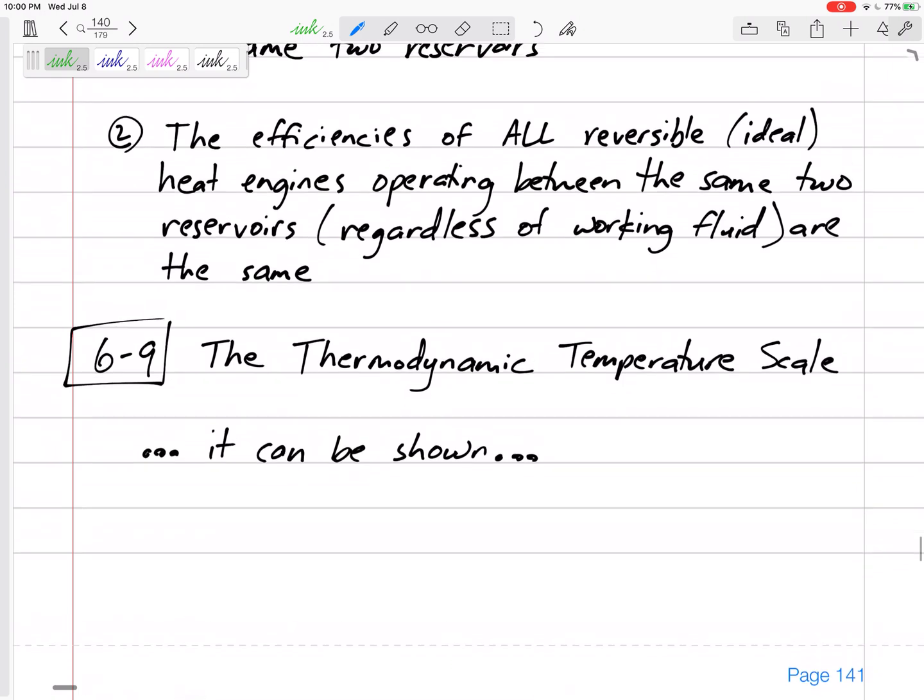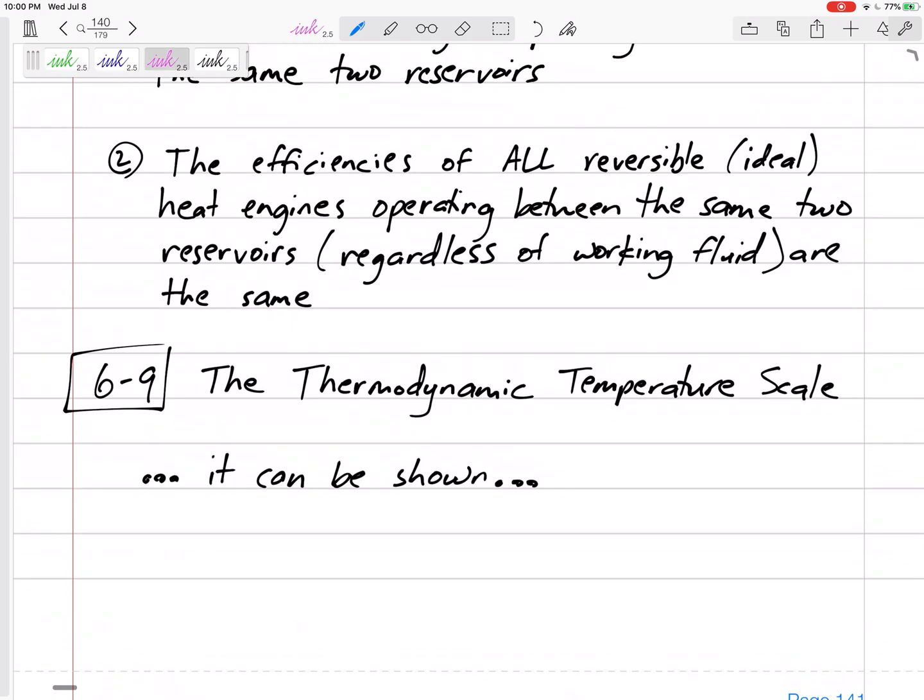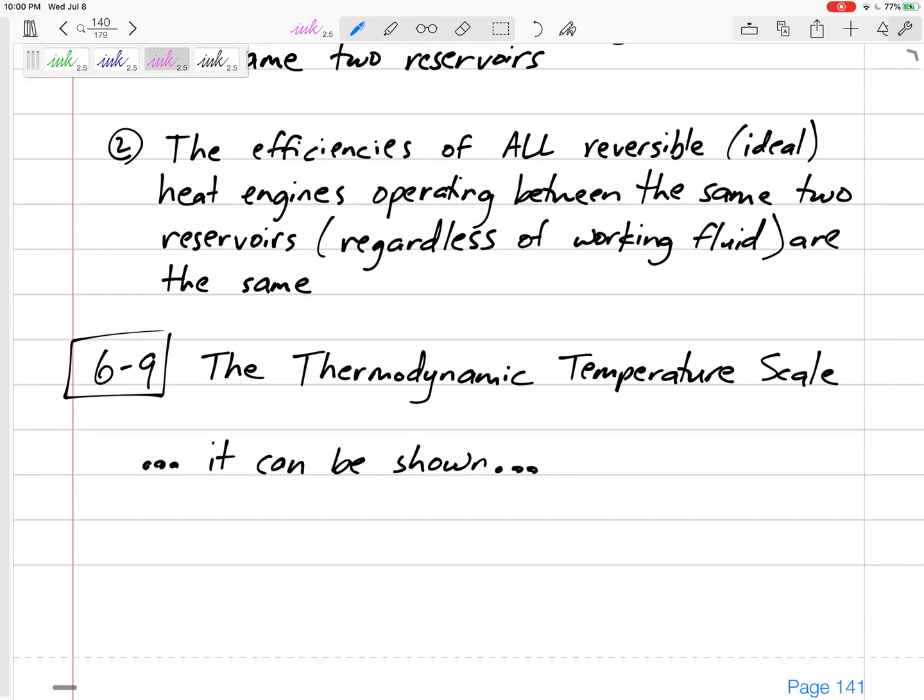And real quickly, I don't even have any derivations here. You can look in our book. It can be shown that the ratio of QH over QL of a reversible process is equal to the ratio of temperature hot divided by temperature cold.